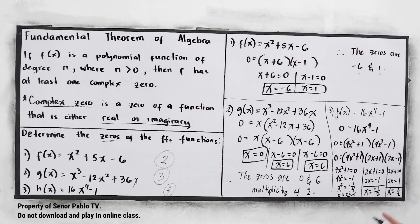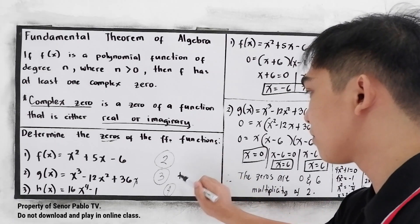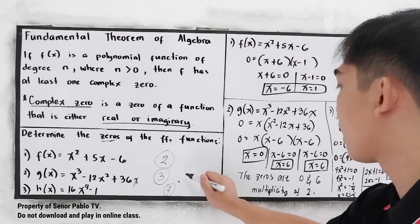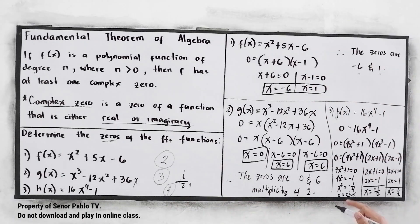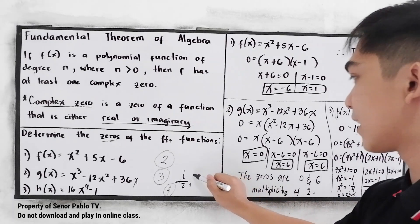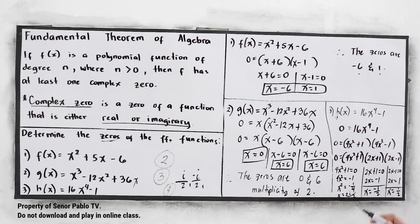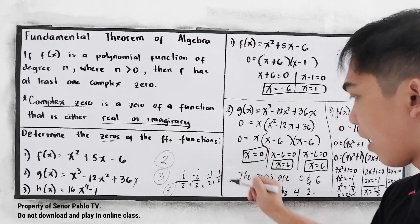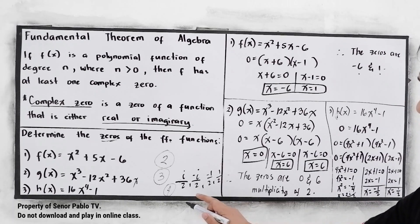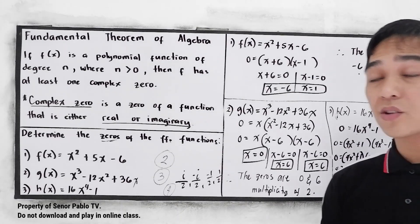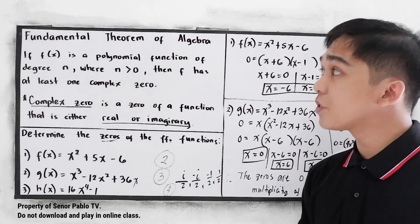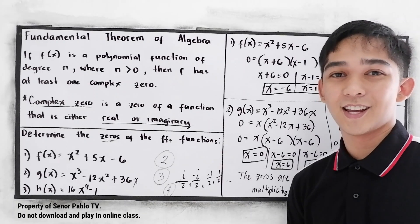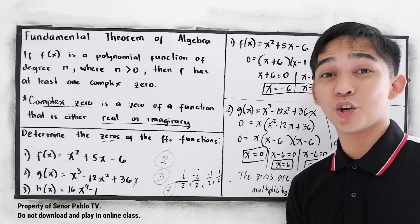So if we're going to write our zeros, we have 4: positive i over 2, negative i over 2, negative 1 half, and positive 1 half — that's 1, 2, 3, and 4. So that's how to apply the Fundamental Theorem of Algebra. Thank you for watching Senior Pablo TV.